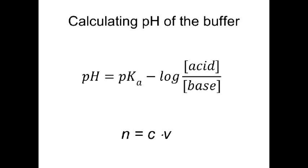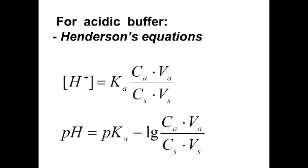Buffer solutions are characterized by two values: pH and buffer capacity. The pH of a buffer solution can be calculated using the Henderson-Hasselbalch equation — here is the general form. To solve problems we use simplified equations; it is easier to calculate the hydrogen ion concentration first and then pH as minus log of the hydrogen ion concentration. These formulas are used for acidic buffer solutions.